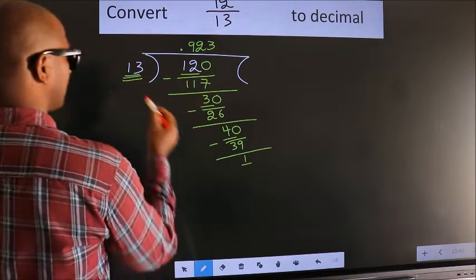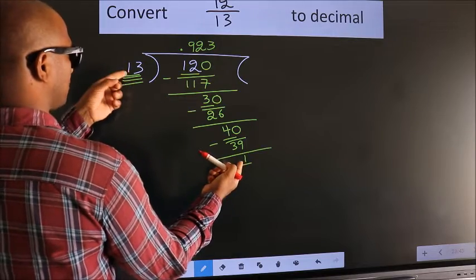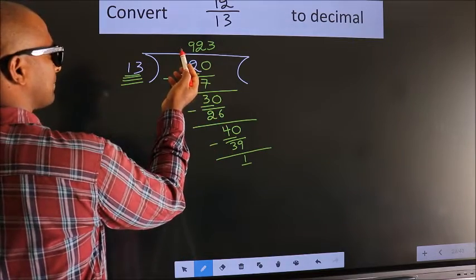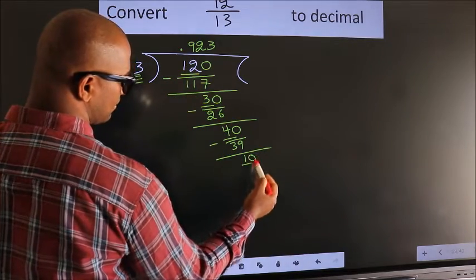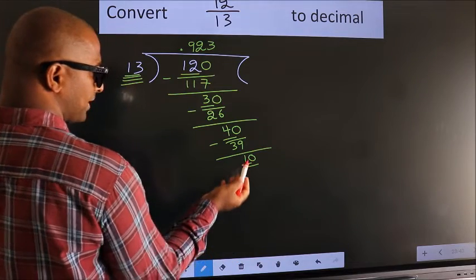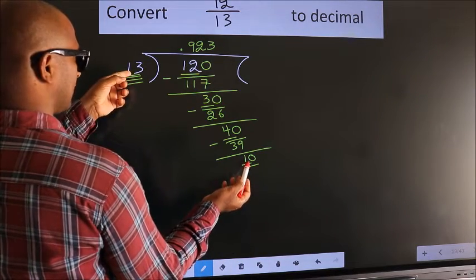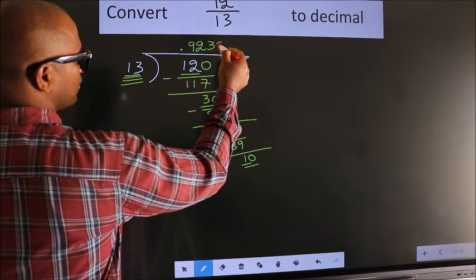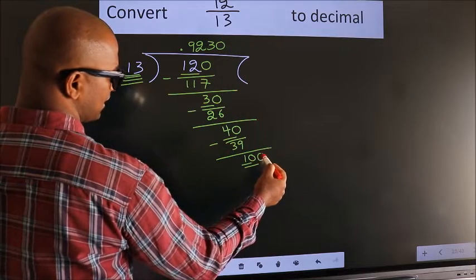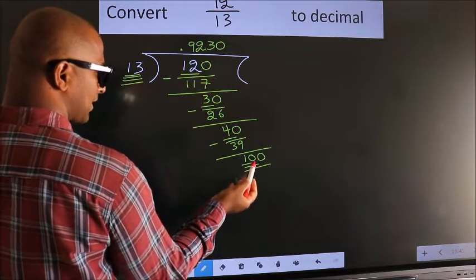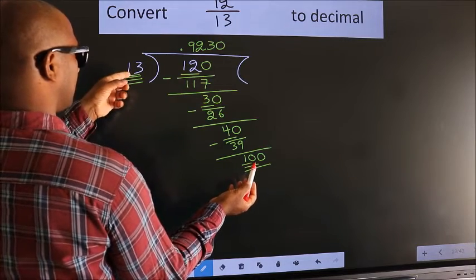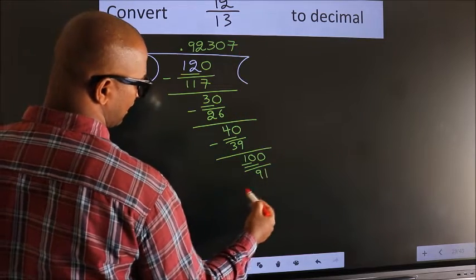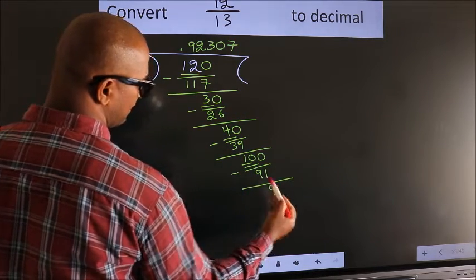Here we have 1, here 13. 1 is smaller than 13. And we already have the decimal, so we can directly take 0. So 10. 10 is still smaller than 13. So to get one more 0 here, we should put 0 here. So 100. A number close to 100 in the 13 table is 13 sevens, 91. Now we subtract. We get 9.